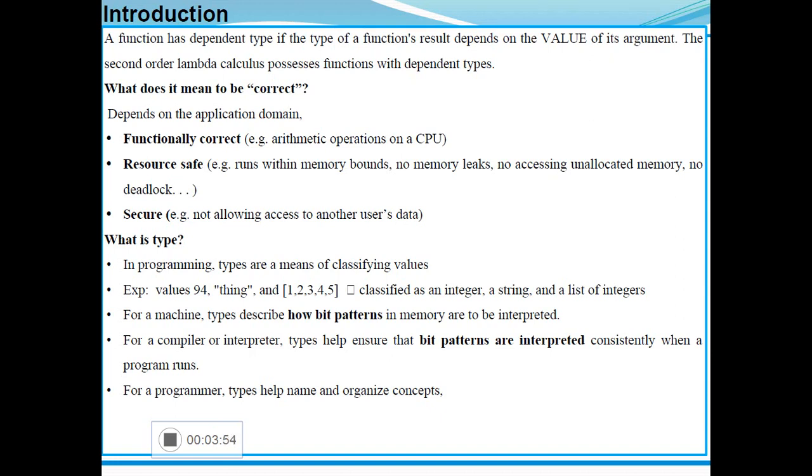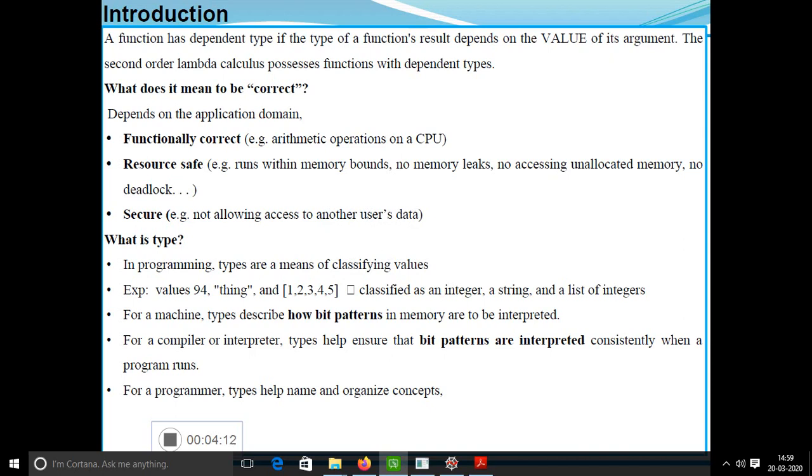Second terminology we have to know in dependent types is type. In programming, types are a means of classifying values. For example, 94 is an integer type. Thanks is a string. Within square brackets, a group of values if you are passing, that is of a list data type. In terms of machines, types describe how bit patterns in memory are to be interpreted. For a compiler or interpreter, types help ensure that bit patterns are interpreted consistently when a program runs. For a programmer, types help name and organize concepts.